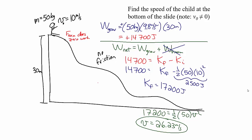If we had him start from rest, the final kinetic energy would be just 14,700 joules, giving a speed of 24.25 meters per second. Notice that the fact that he started at 10 meters per second does not mean he's going 10 meters per second faster when he reaches the end. Starting from rest he has a speed of 24.25 meters per second; starting with a speed of 10 meters per second he has a speed of 26.23 meters per second.